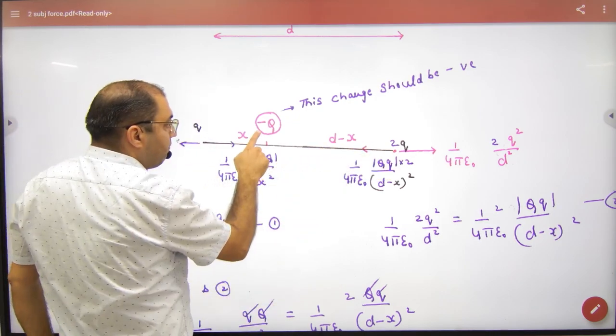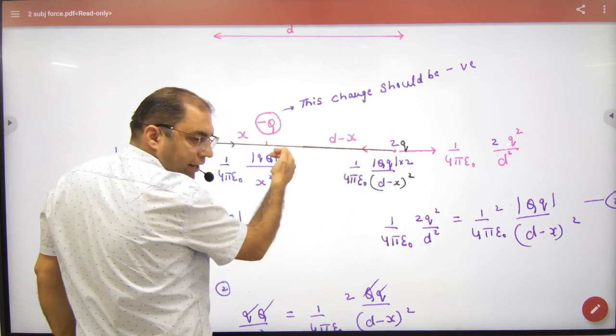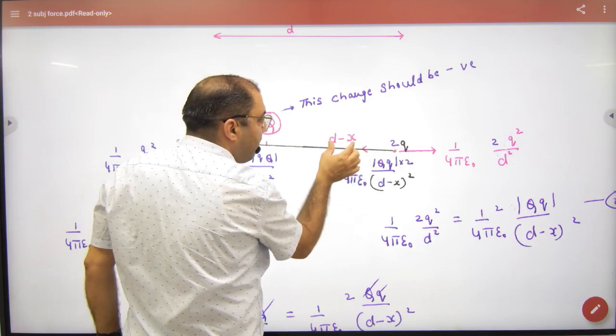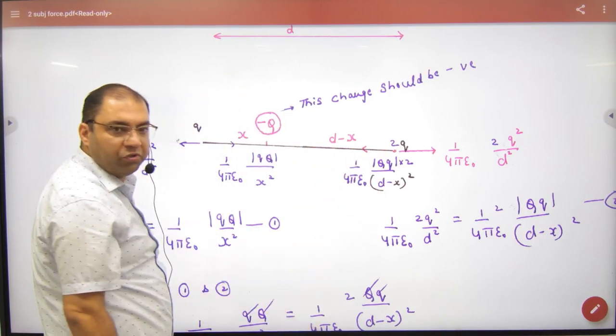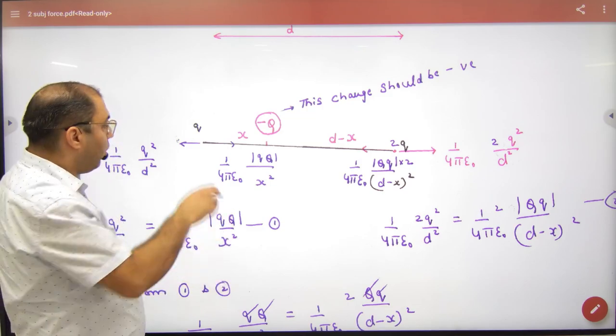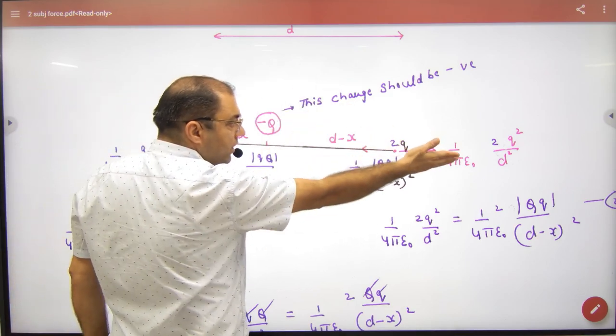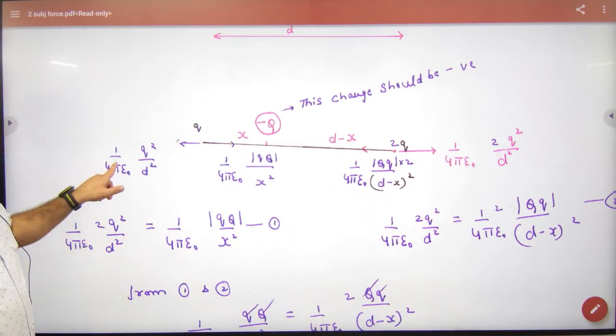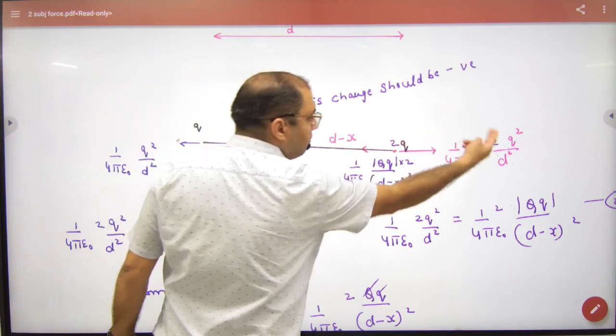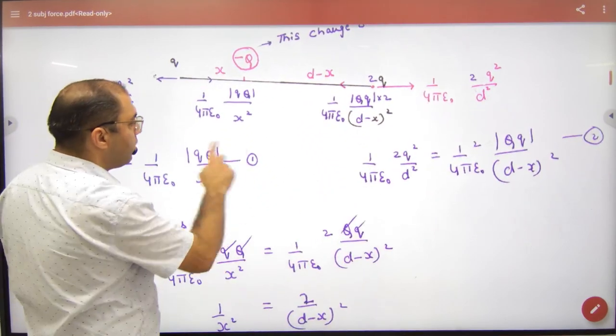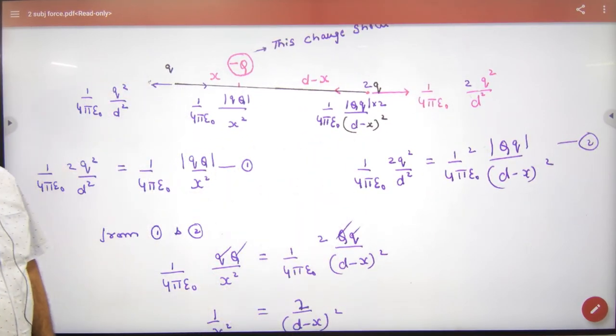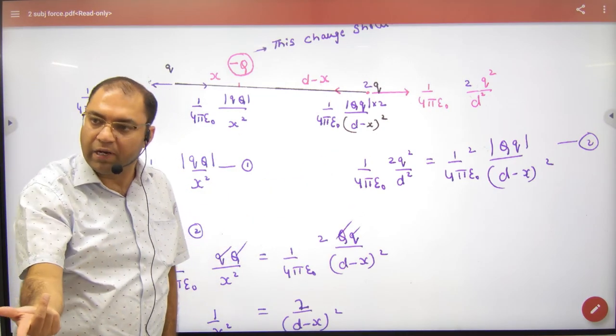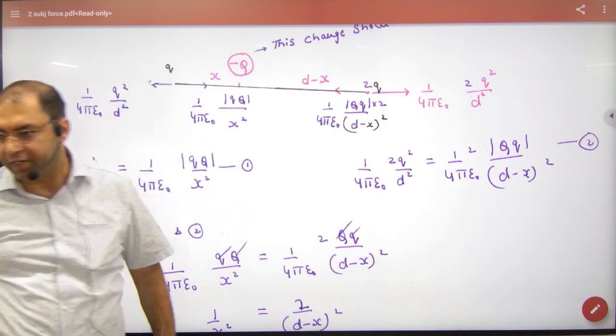And this 2Q is repelling Q: 1/(4πε₀) × q × 2q / D². Is this step clear? Are all forces clear? Now talking about this: minus Q is attracting 2Q, force is 1/(4πε₀) × magnitude of charge × 2q / (d-x)². And this Q is repelling 2Q: 1/(4πε₀) × q × 2q / d². So this force must equal this force, and this force must equal this force.